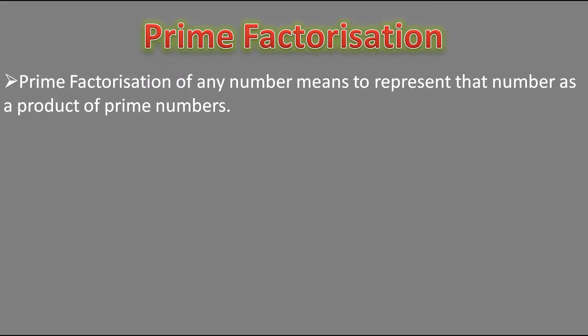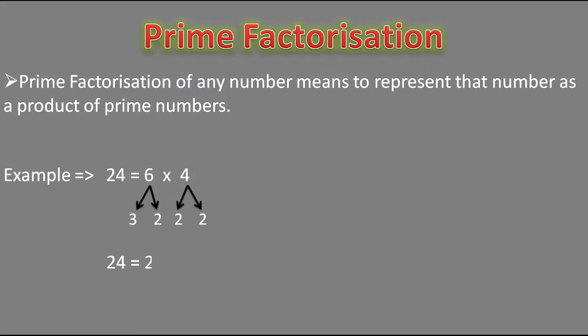Let's take the number 24 as an example. 24 can be represented as 6 times 4, but 6 and 4 are both composite numbers, so this is not prime factorization. If we split 6 as 3 times 2 and 4 as 2 times 2, the representation becomes 2 into 2 into 2 into 3. Now all numbers are prime, so this is called the prime factorization of 24.